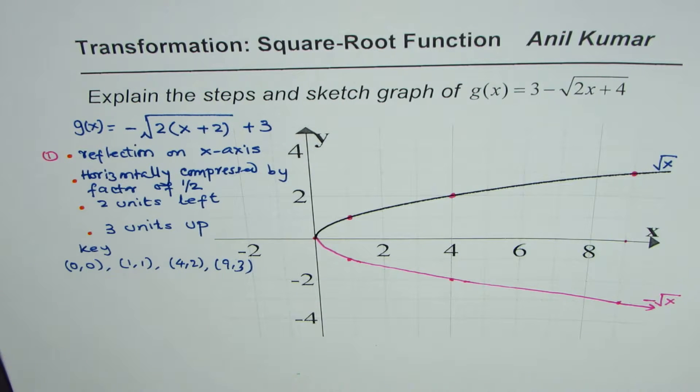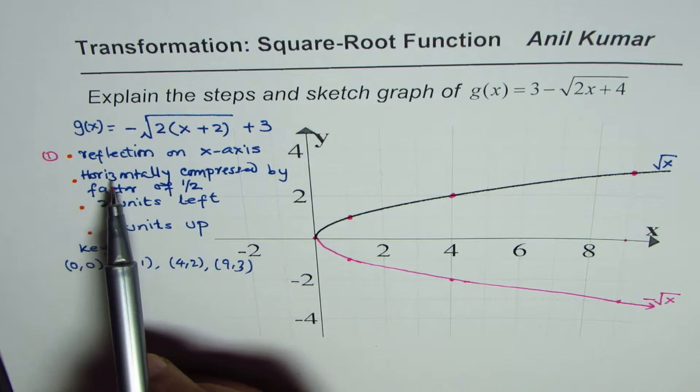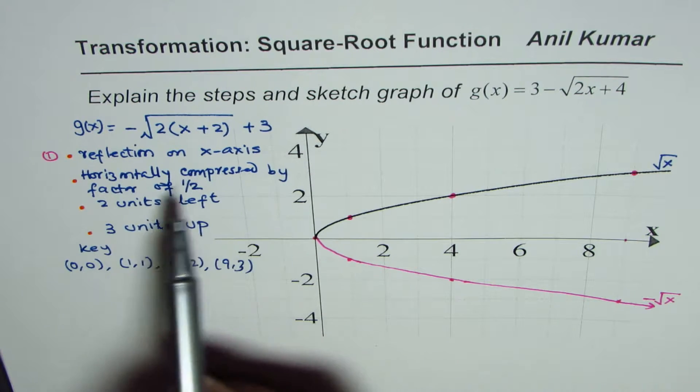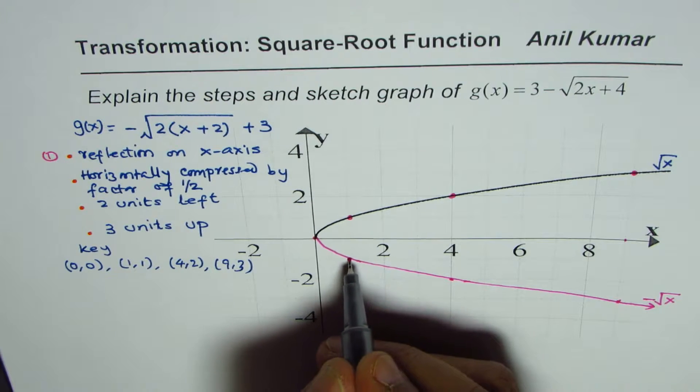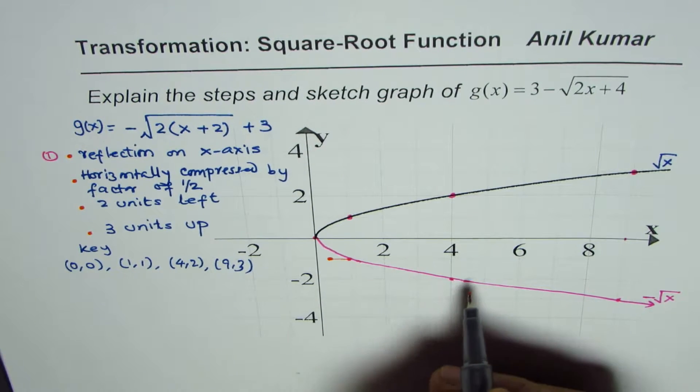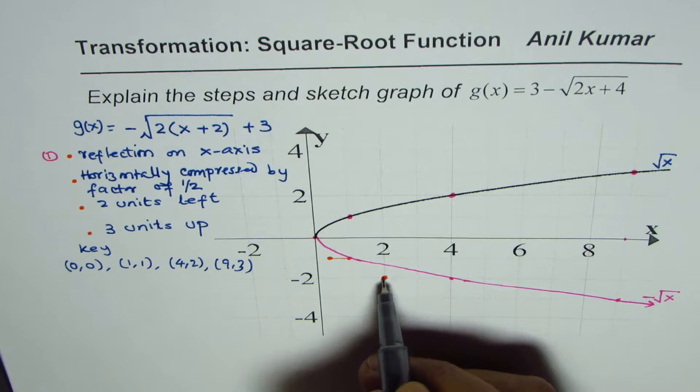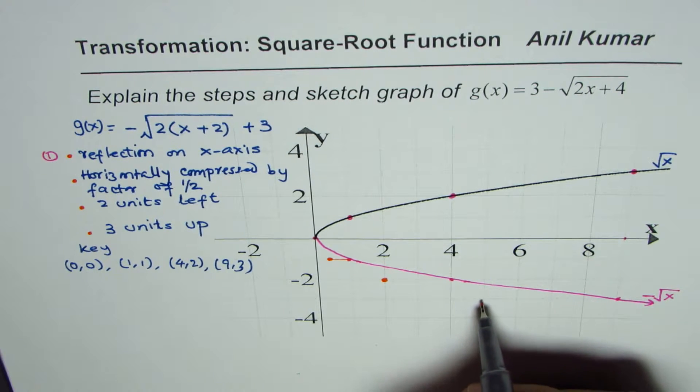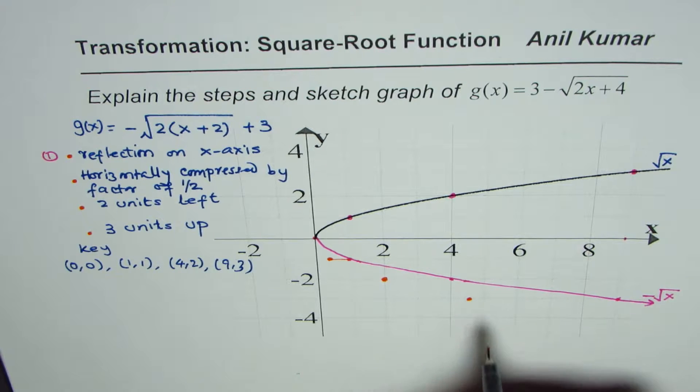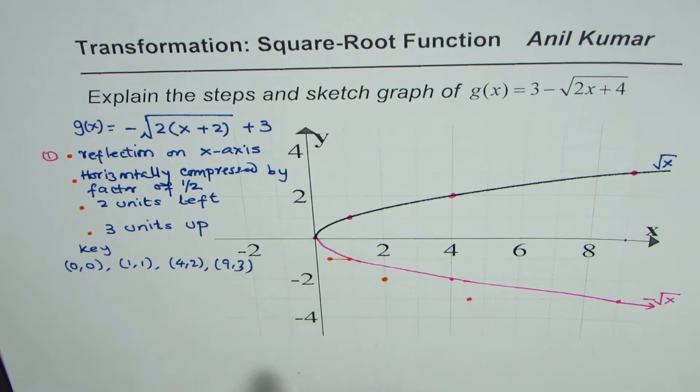Now let us see how to do horizontal compression by a factor of half. It really means that every point comes halfway down. So 4—half of 4 is 2—this is at 9, that means this will shift to 4.5. So this is the kind of graph. Half of zero is zero.